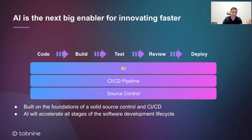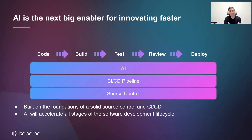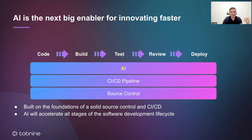You can think of that as having another layer in your system — an AI layer that is learning from your system of record, learning from all the data you've accumulated throughout the stages of the software development lifecycle, in order to accelerate all the stages of the lifecycle moving forward.